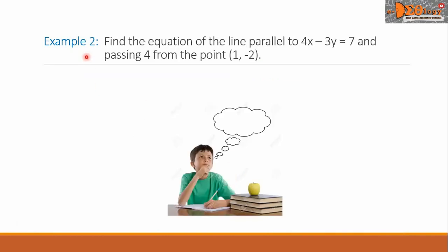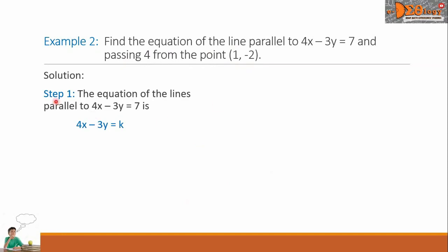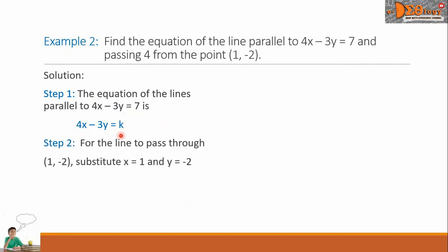Let's have example 2. Find the equation of the line parallel to 4x minus 3y equals 7 and passing 4 units from the point (1, −2). For our solution, step 1: the equation of lines parallel to the given line 4x minus 3y equals 7 is 4x minus 3y equals k. We want to solve for k.